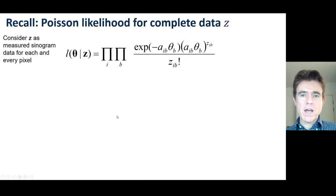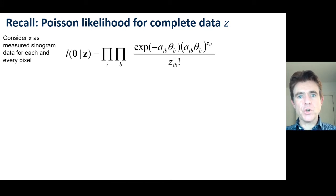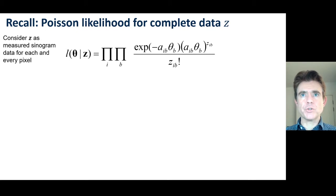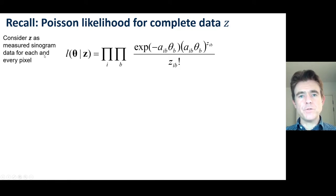Now let's look at how we incorporate those energy functions — which give those prior probabilities — into our maximum likelihood reconstruction to turn it into a maximum a posteriori reconstruction. First, let's quickly revise the Poisson likelihood for complete data Z. The complete data Z corresponds to having a complete set of sinogram data for each and every pixel.